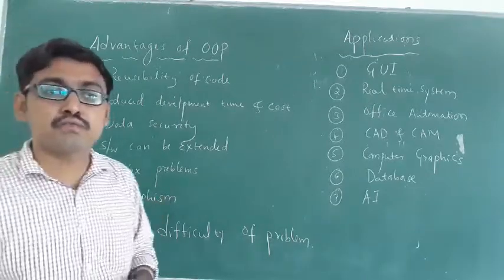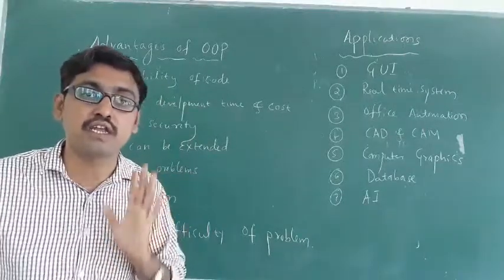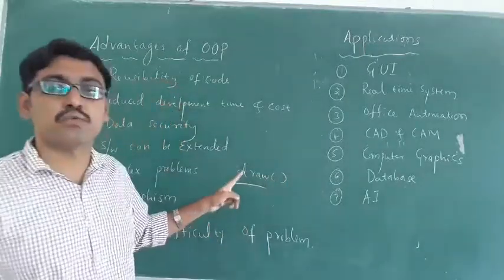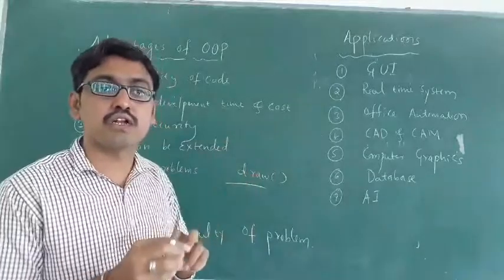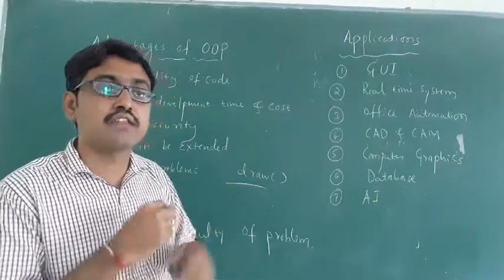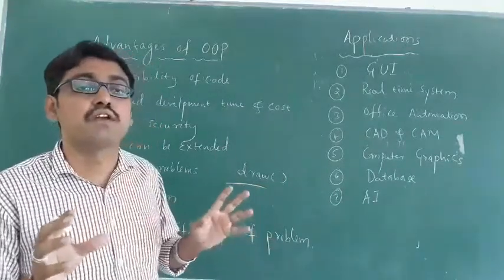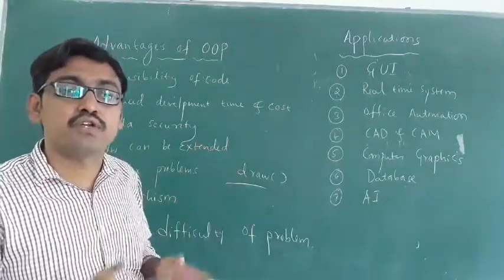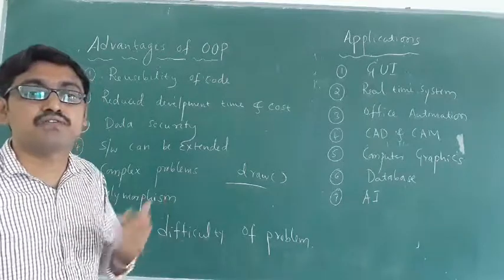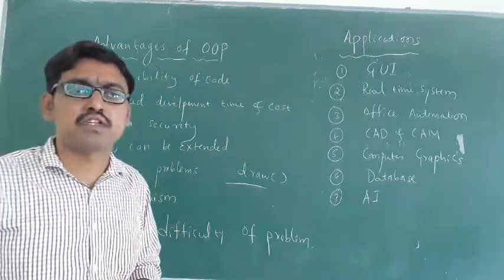Polymorphism is another advantage. Polymorphism means it allows you to perform different tasks using a single name. For example, using a single 'draw' function you can draw a circle, a rectangle, or a triangle. By using a single name, you can perform different tasks — this is allowed only in object oriented programming language.